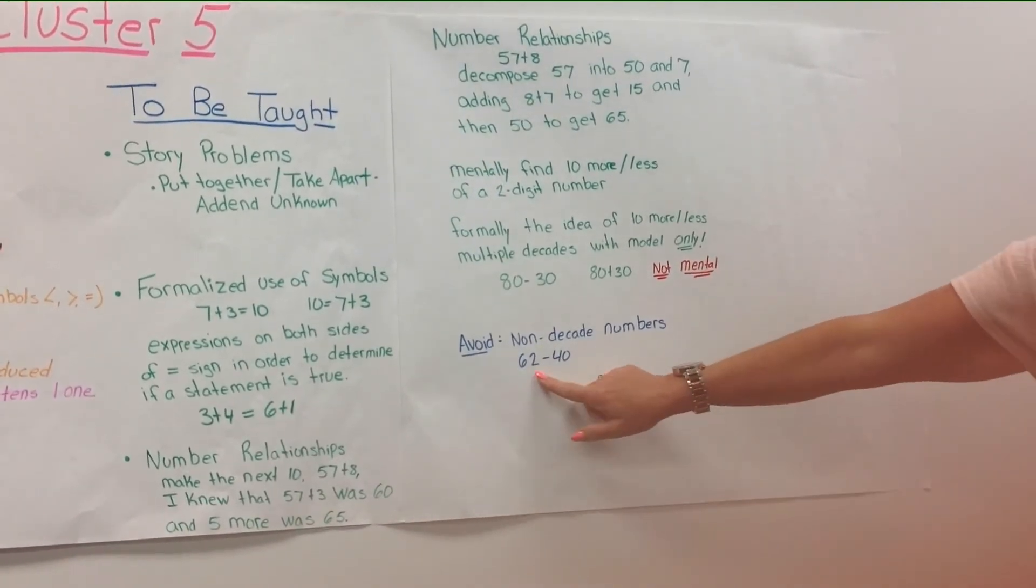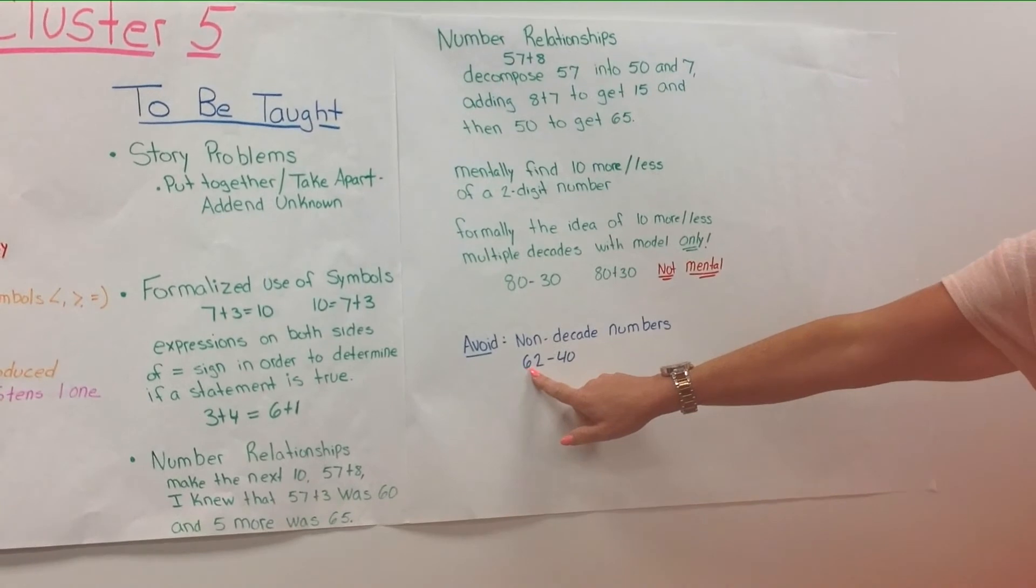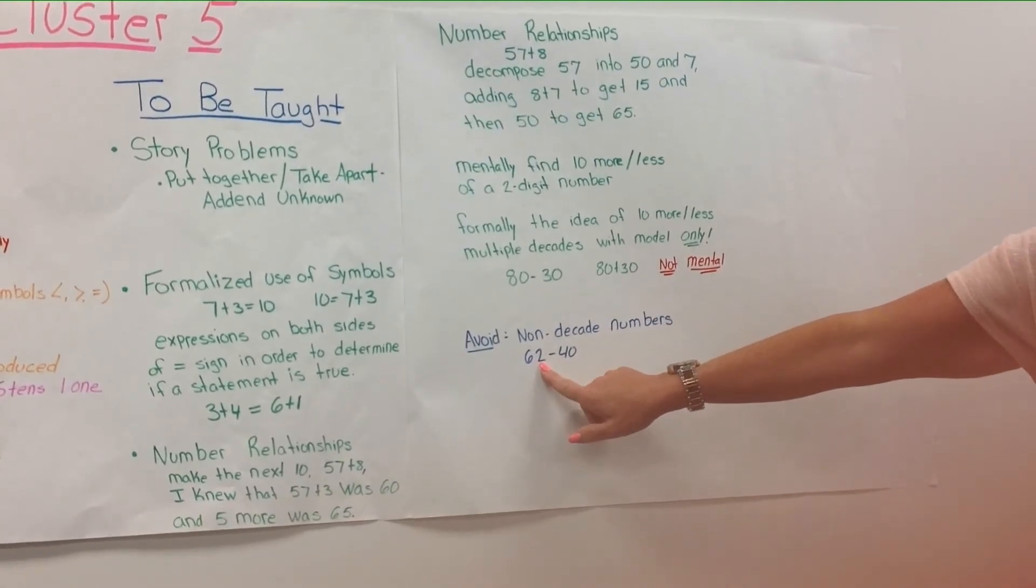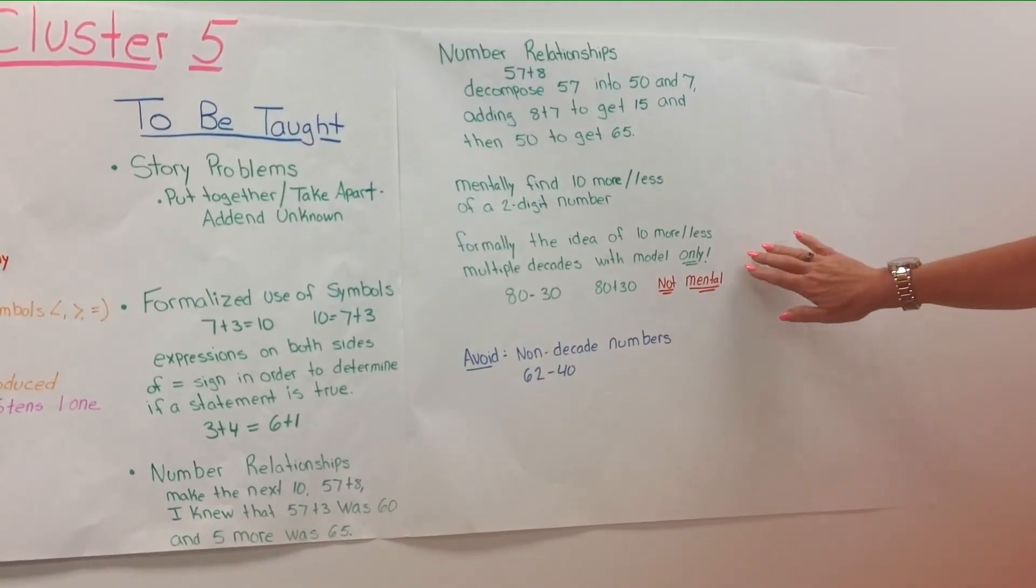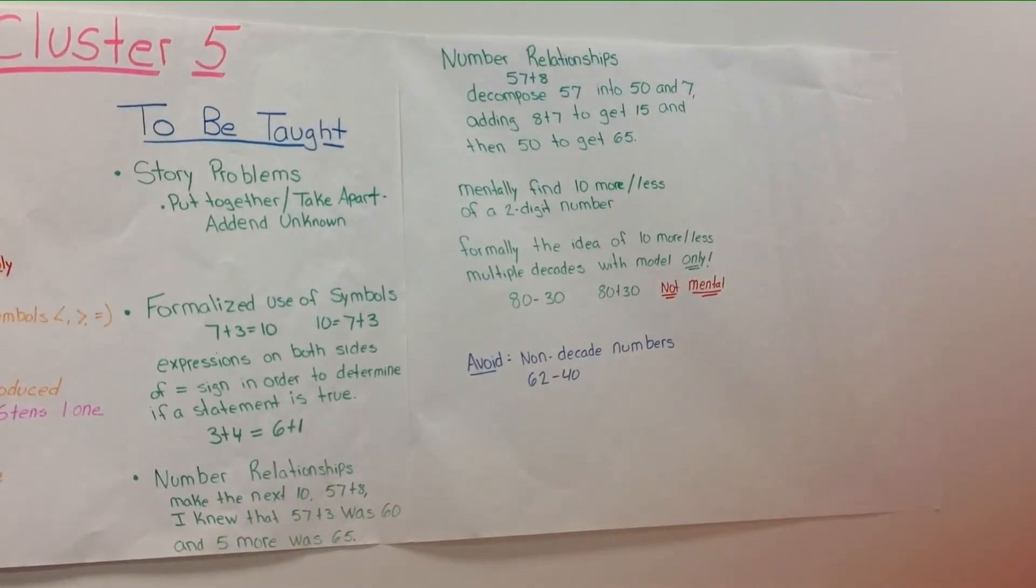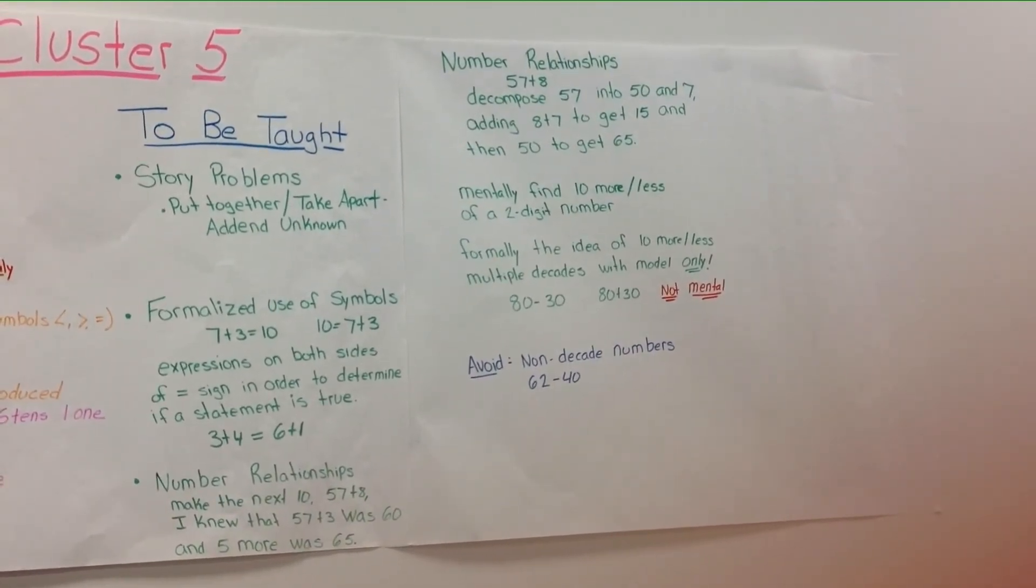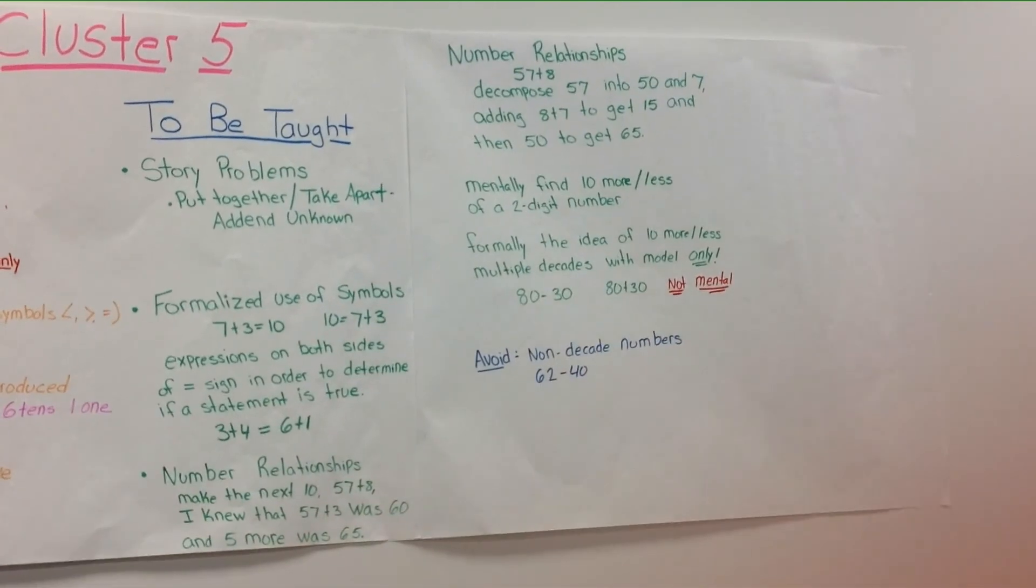Students will not be required to work with a non-decade number such as 62 minus 40. However, they will be able to add a number such as 57 plus 10 to find the 10 more.